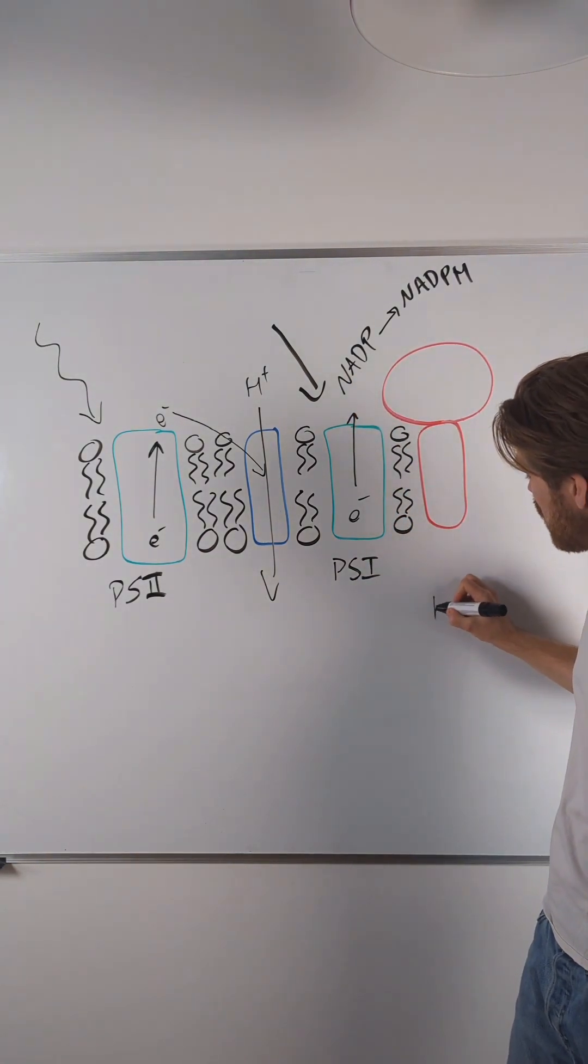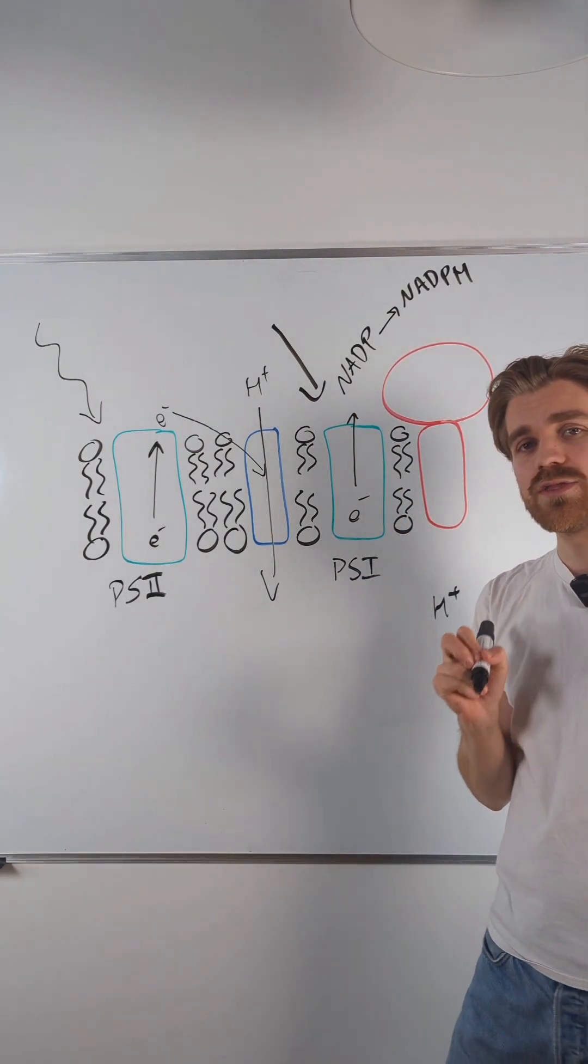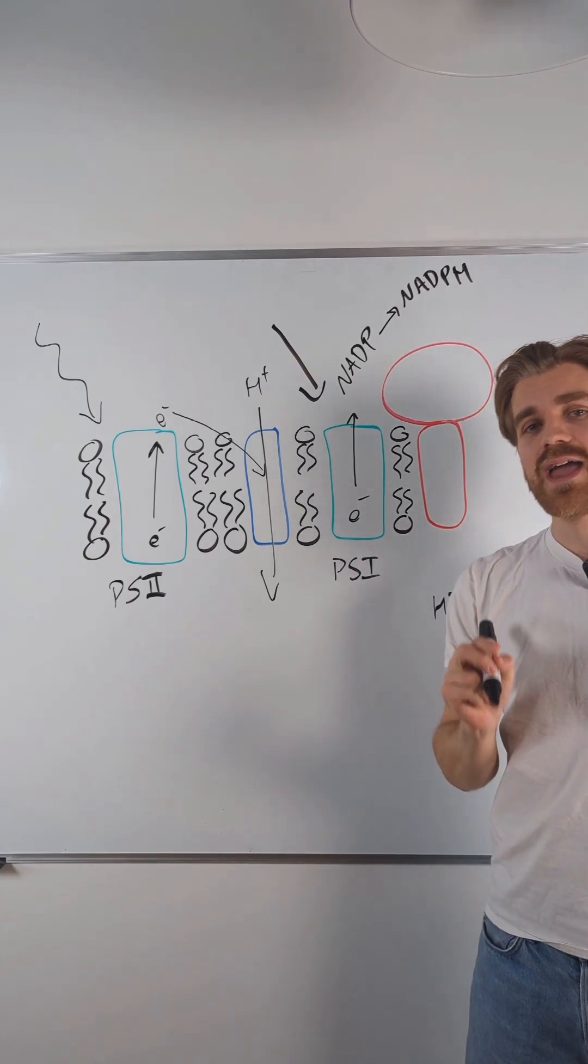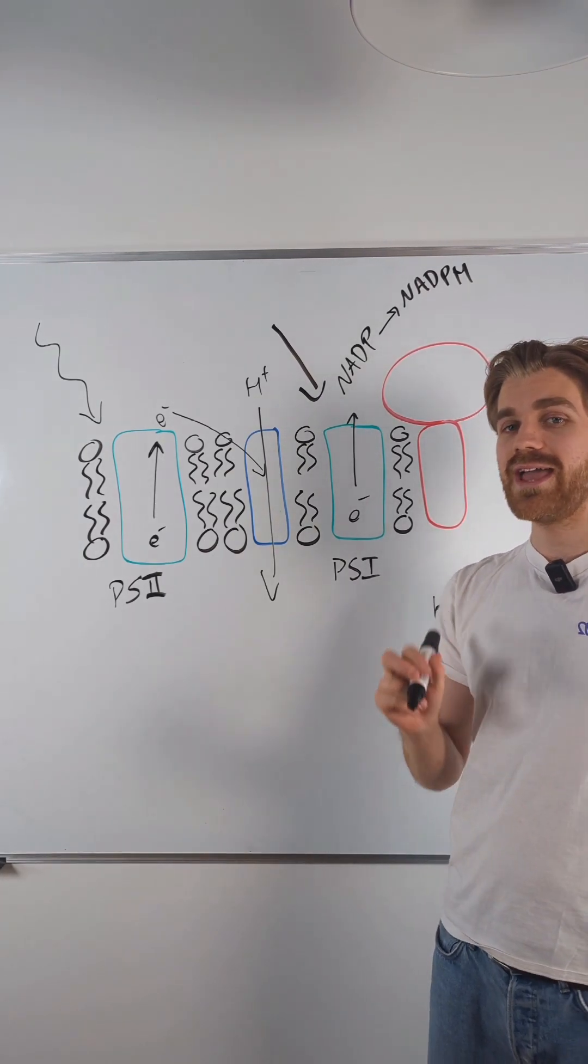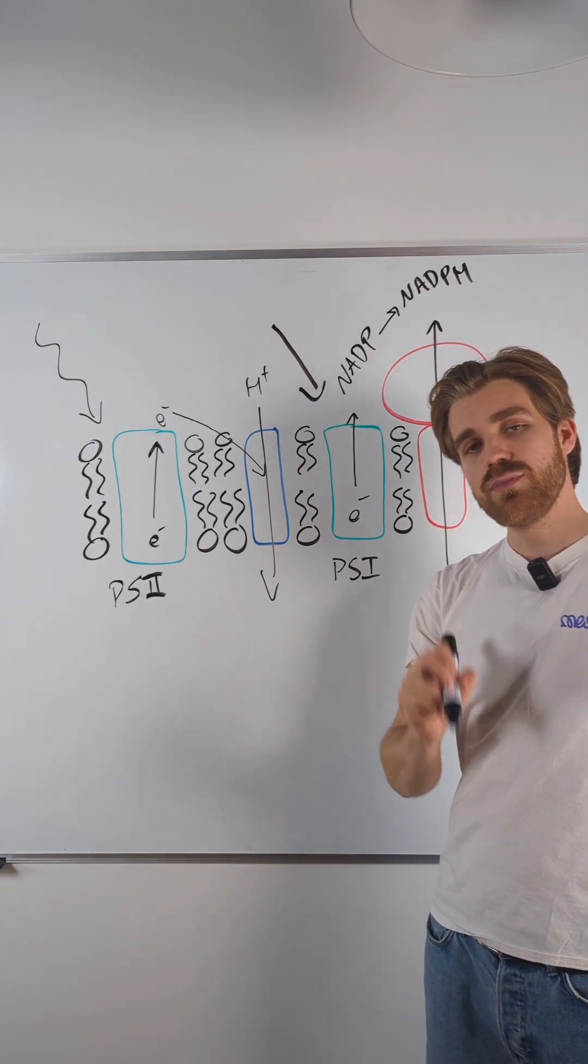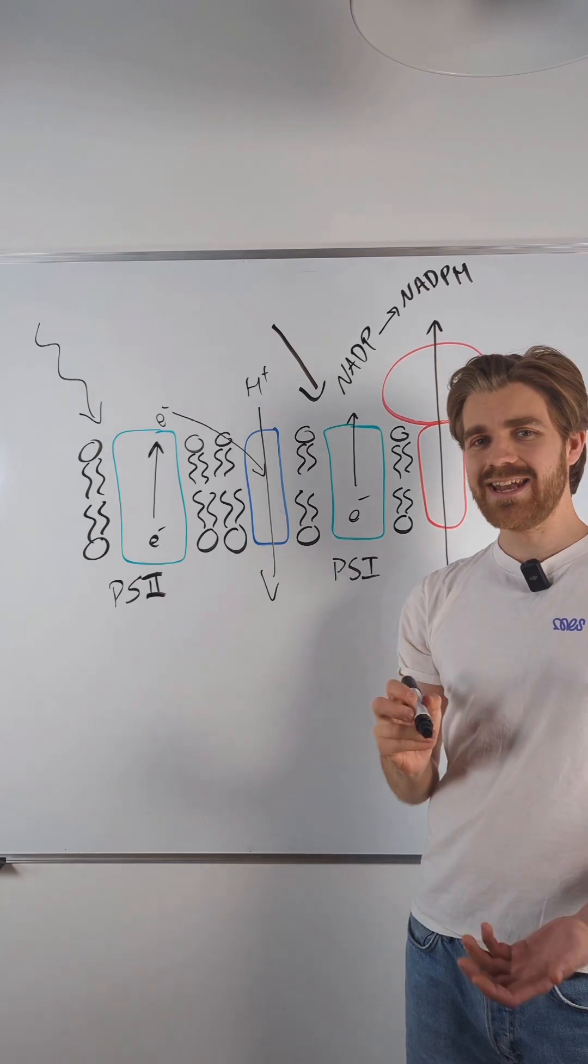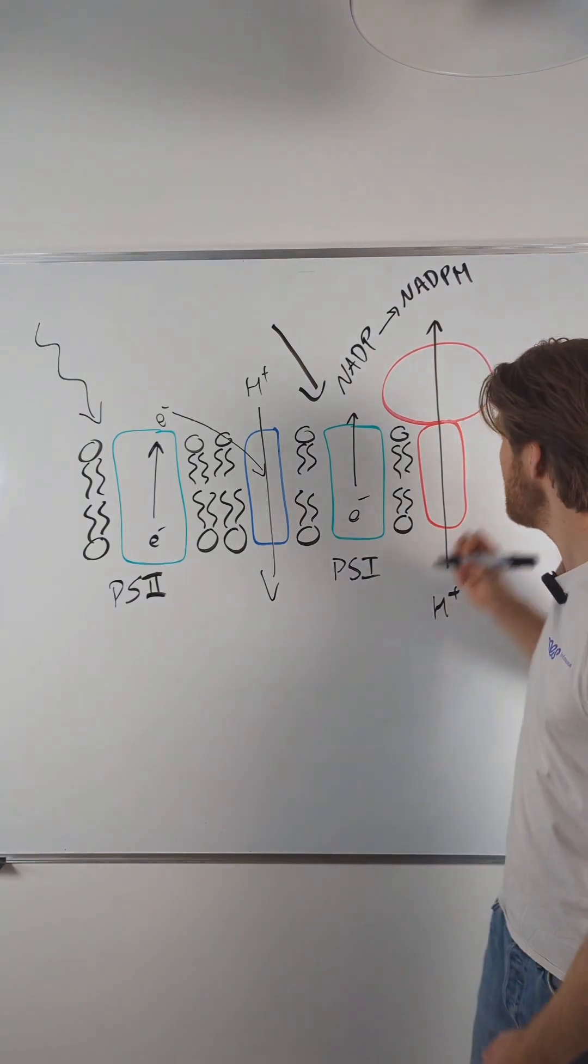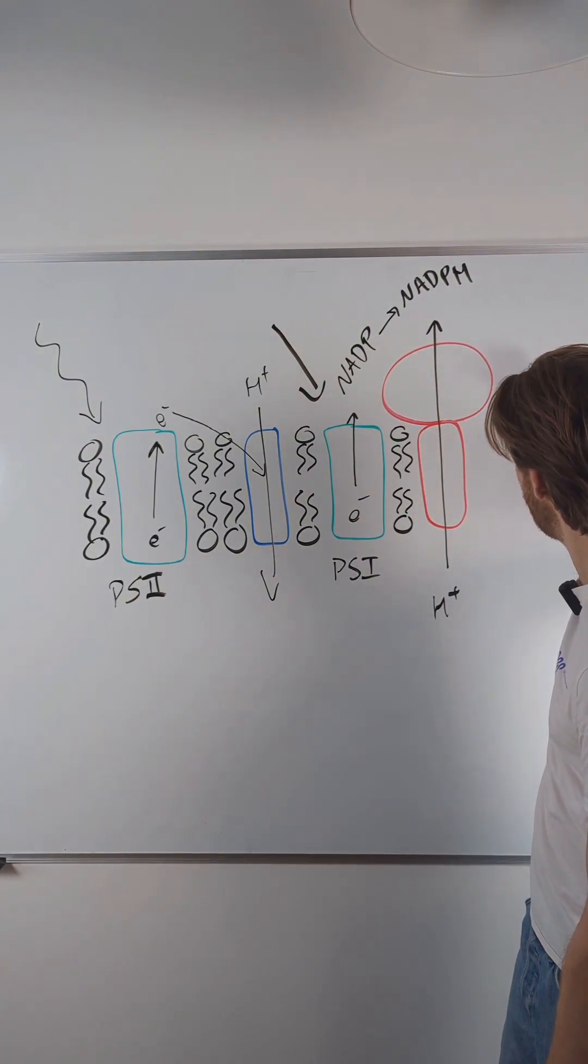Now those H plus ions that have built up in the thylakoid lumen they are going to move through the ATP synthase down their concentration gradient. The movement of these H plus ions provides energy for the production of ATP from ADP and inorganic phosphate.